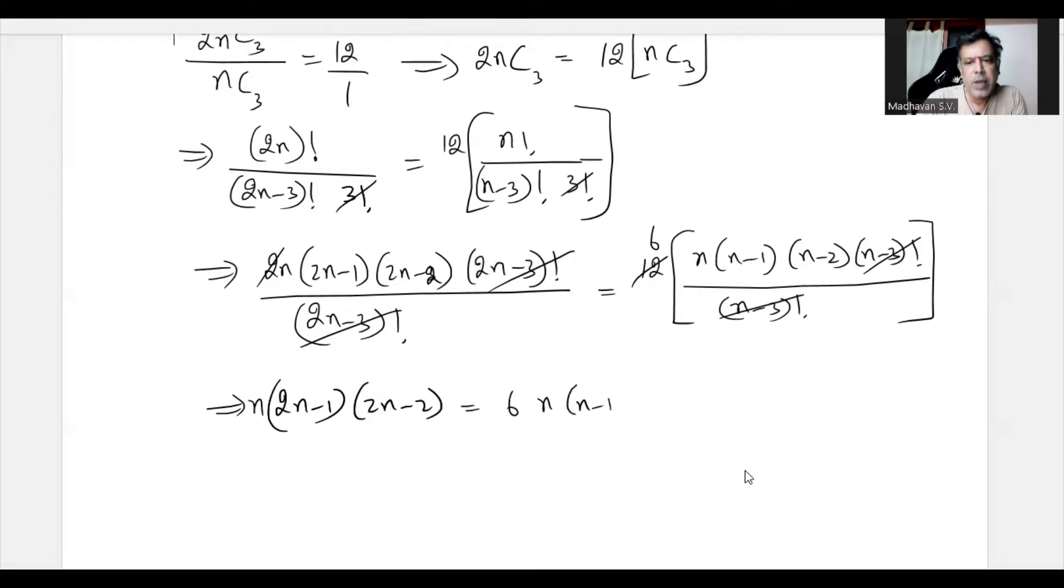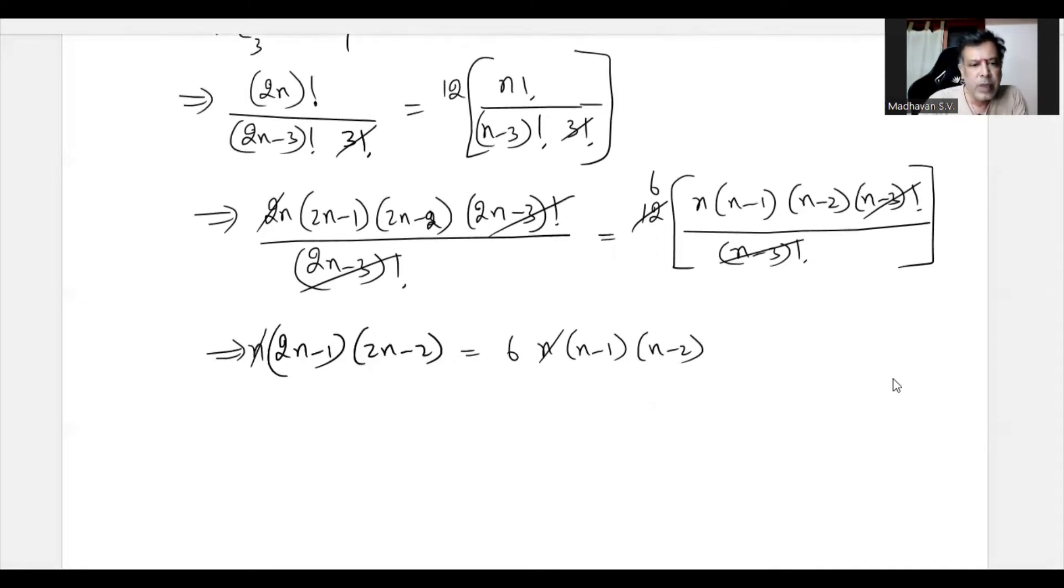So we have now (2N-1) times (2N-1) times (2N-2) is equal to 6 times N times (N-1) times (N-2). Again, this N and N can be cancelled. So we have now this factor (2N-2) is equal to 6 times (N-1) times (N-2). So now let us expand it.